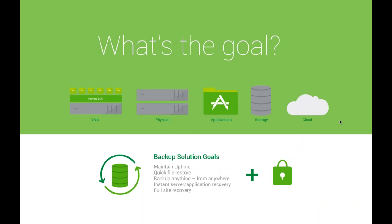For most IT departments the goal is really to get back to a normal working system as fast as humanly possible. You could replicate everything from one system to another, but it becomes a scale of economics — not everybody can afford a dual production environment. We have to be more innovative and come up with ways to manage and recover items in a reasonable amount of time while remaining plugged into the needs of our users.